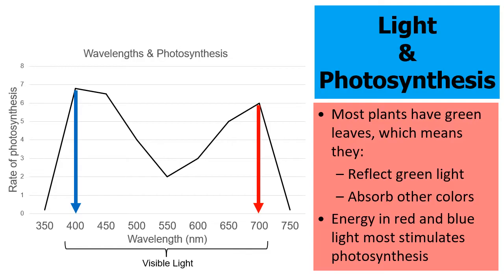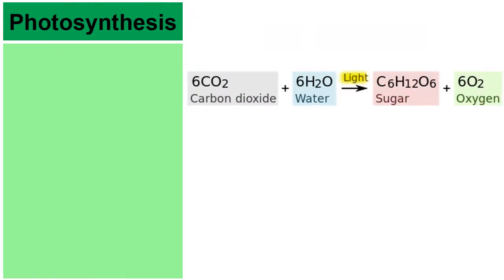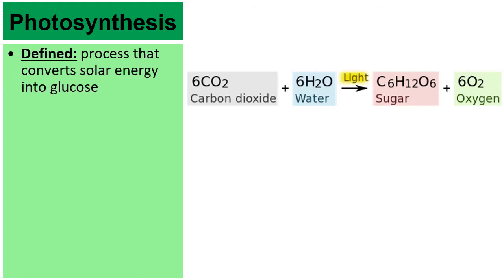Notice there's a dip or valley in the middle of the graph around 550 nanometers — ironically, that's the wavelength for green. The color we most associate with plants is actually the least powerful for photosynthesis, because leaves are green and most green sunlight is reflected; very little green light is ever actually absorbed to drive photosynthesis.